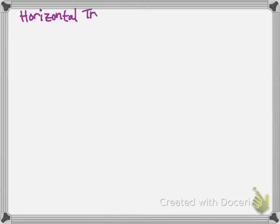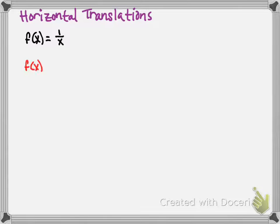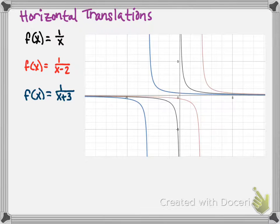We still also have horizontal translations. Here's our parent function, and then f of x equals 1 over x minus 2, with the minus 2 as part of the denominator. And f of x equals 1 over x plus 3, with the plus 3 as part of the denominator. Here are our graphs for comparison.